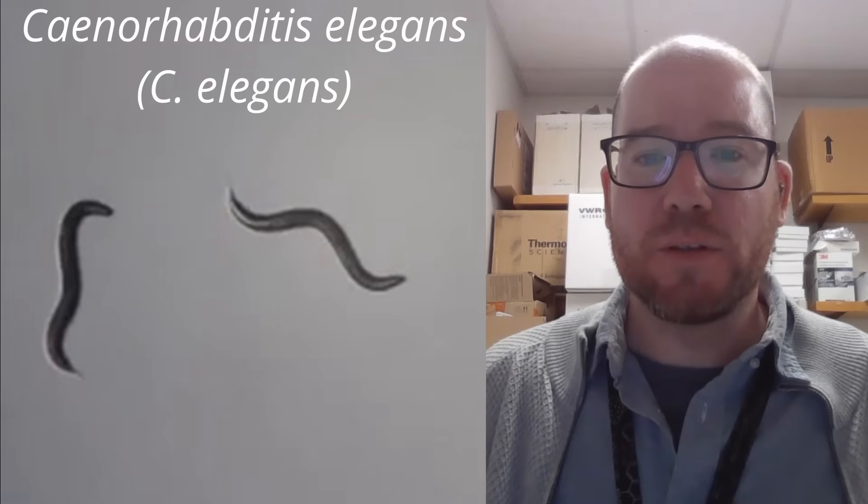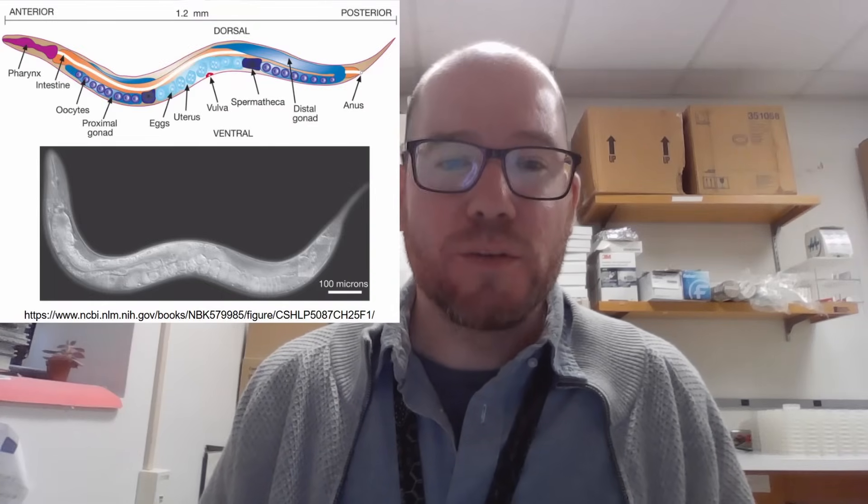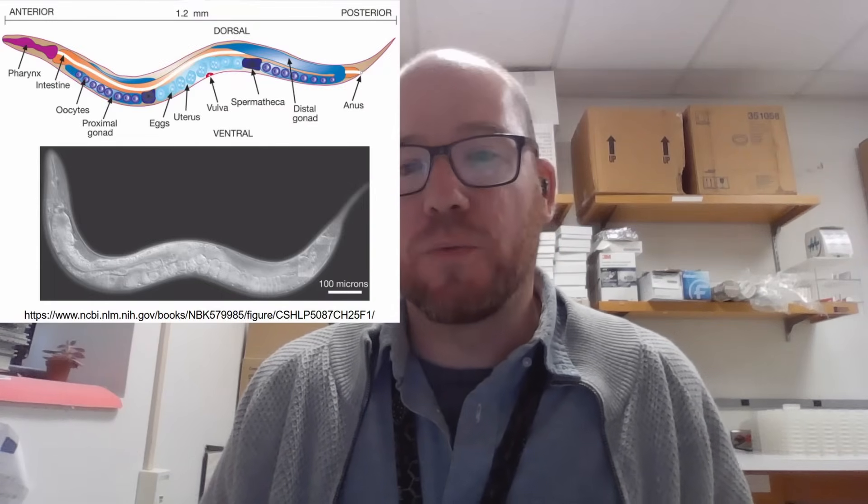In the Zhou lab, we use these little worms called C. elegans to track the recycling process during embryonic development. There are many reasons for using C. elegans, with one of the biggest reasons being that they are transparent. This makes it possible for us to track individual cells in the living embryos or worms as they develop.